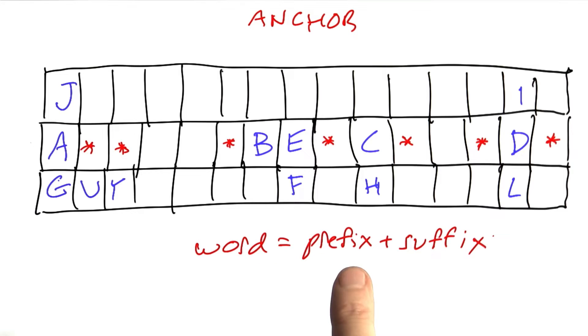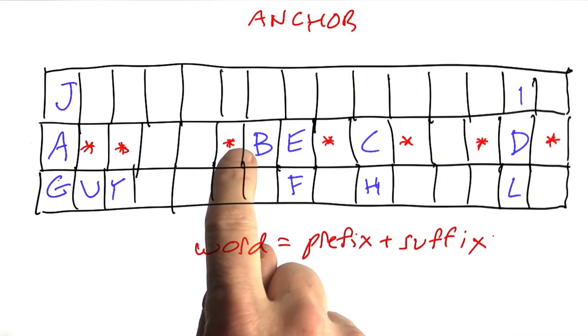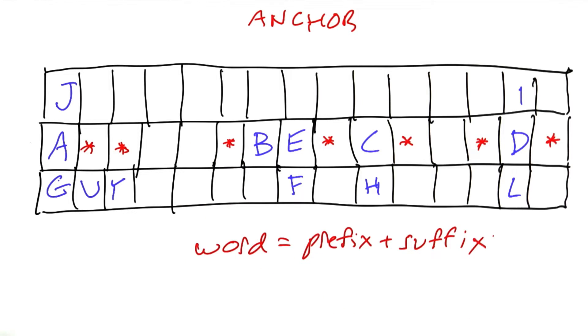Now we want to find a word which consists of a prefix plus a suffix. We get to define the game so we can say that for every anchor point the prefix is going to be zero or more letters to the left of the anchor point, not counting the anchor point itself. And then the suffix will be the anchor point and everything to the right. And of course we have to arrange so that prefix plus suffix together form a word which is in the dictionary.